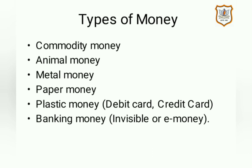The third one is metal money. At the onset of imperialism, the use of metal coins started, and this was known as metal money. The fourth one is paper money. By the support of central government, paper money became widely accepted as a means of exchange of goods and services. The next one is plastic money. With the introduction of the banking system, debit card and credit card came into existence, and this is known as plastic money.